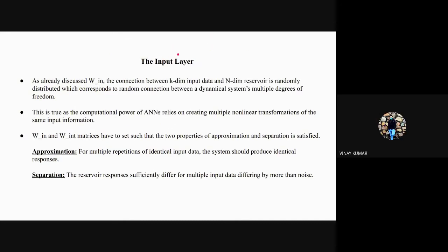I was talking about the input layer. There is this input W_input matrix which is a connection between k dimensional input which responds to random connection between a dynamical system with multiple degrees of freedom. ANN relies on creating multiple nonlinear transformations for the same input information, so we can change W_output and have our favorable outcome. We need to select W_input and internal matrix.